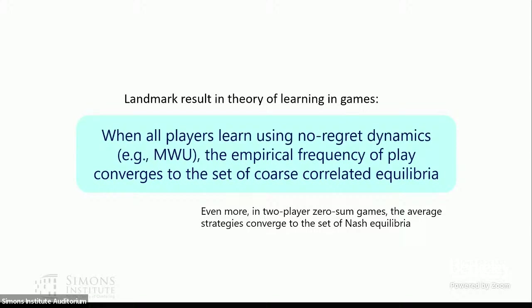One of the reasons there has been so much interest in no-regret learning is this landmark result: when all players learn using no-regret dynamics, the empirical frequency of play converges to the set of coarse correlated equilibria. This shows that learning — a very per-player local behavior — can induce global game-theoretic notions of equilibrium. It doesn't matter which no-regret dynamics you use, as long as they guarantee that regret grows sublinearly.